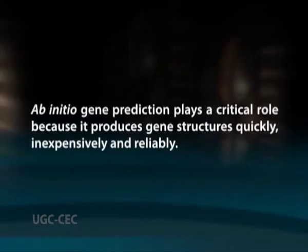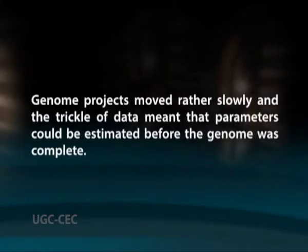Complete genomic sequences are becoming more and more abundant. Given a new genome, one of the first and most important tasks is determining the structure of its protein coding genes. Ab initio gene prediction plays a critical role because it produces gene structures quickly, inexpensively, and reliably. The accuracy of a gene finder depends on many factors, chief among these being proper training. Training a gene finder can be a laborious task, and in the past genome projects moved rather slowly, meaning parameters could be estimated before the genome was complete.